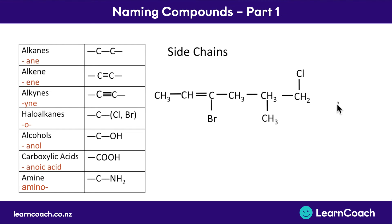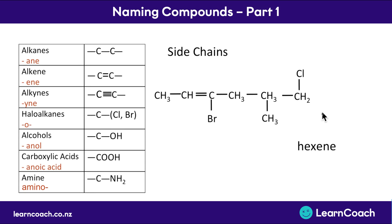Here's a final complex example combining all the rules - the name looks complex but each rule by itself is simple, so just go through it step by step. First, count the carbons in the longest chain: there are six, giving us hex. We've also got a double bond in that chain, so it's an alkene, and we call it hexene. The double bond is attached to the second carbon and we always count from the closest side, making it hex-2-ene.